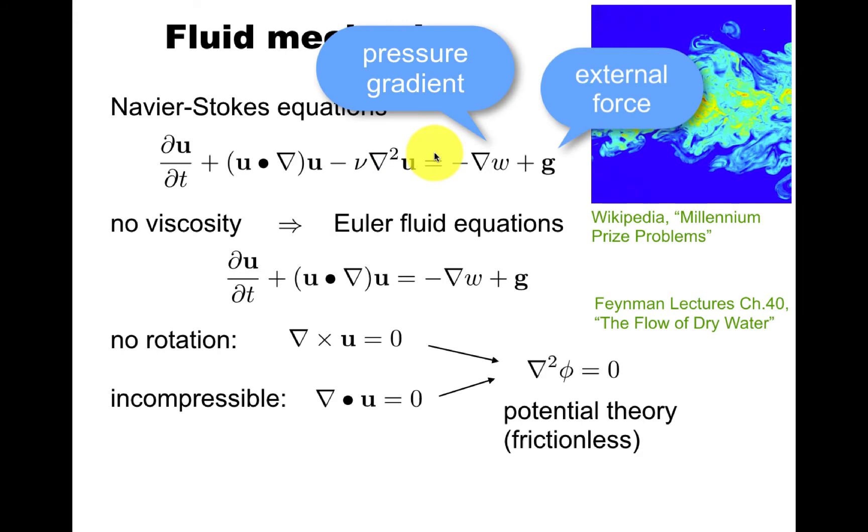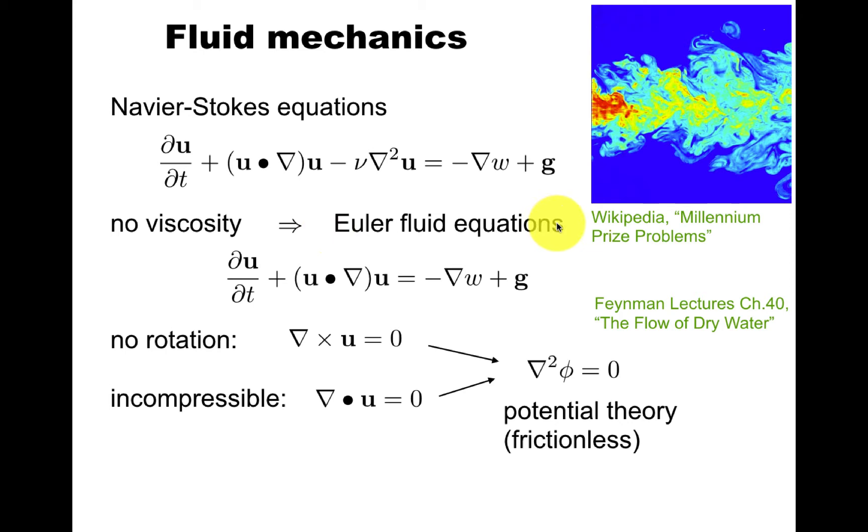I will approximate the viscosity to zero and get the Euler fluid equations. If you also assume that the velocity field u that we're solving for has no rotation and is incompressible, we get what's called potential theory where we solve Laplace's equation.